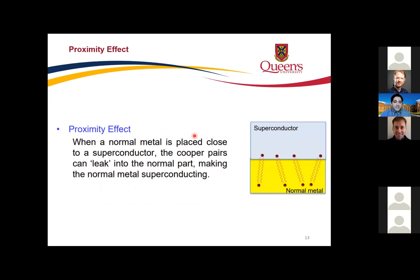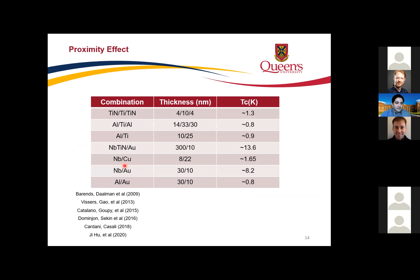Using the proximity effect, different papers have demonstrated that using titanium — a normal conductor — with titanium nitride at different thicknesses yields different critical temperatures. For example, our colleagues at APC used 30 nm aluminum / 10 nm gold / 30 nm aluminum on a substrate, achieving a critical temperature of about 0.8 K.